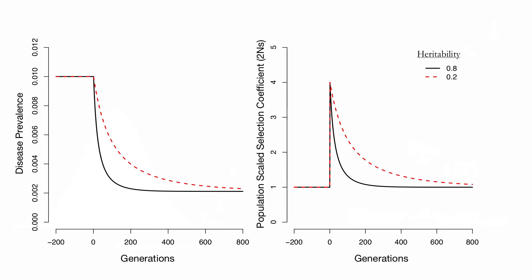To show how this plays out: here I'm showing the evolution of disease prevalence and population-scale selection coefficient for a disease that starts with a prevalence of 1% and an allele starting with a population-scale selection coefficient of 1. After 200 generations at mutation-selection balance, I abruptly increase the fitness cost from 20% to 80%. Initially this causes a sharp increase in the selection coefficient, but the prevalence is reduced over a relatively small number of generations, bringing the selection coefficient back to where it was before. This response is extremely fast when heritability is high, but even with a heritability of 20%, selection coefficients get most of the way back to their original values within just a few hundred generations.